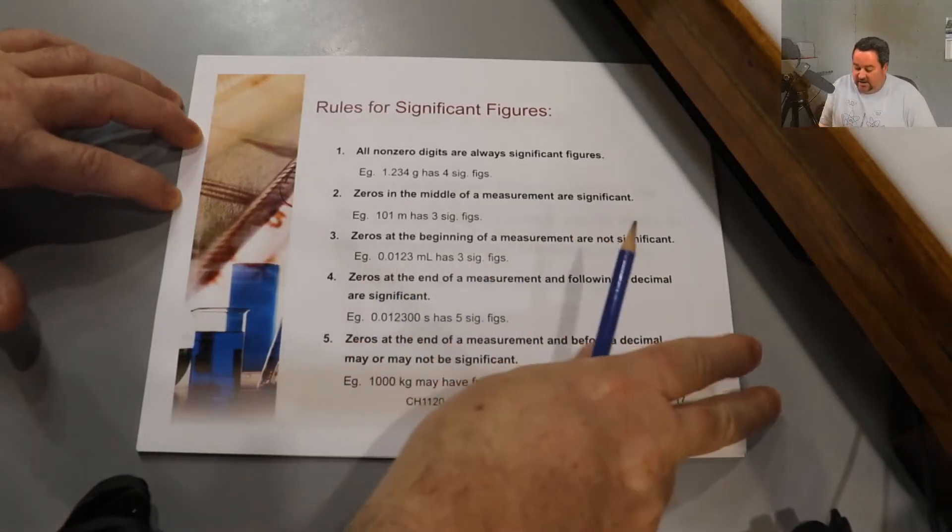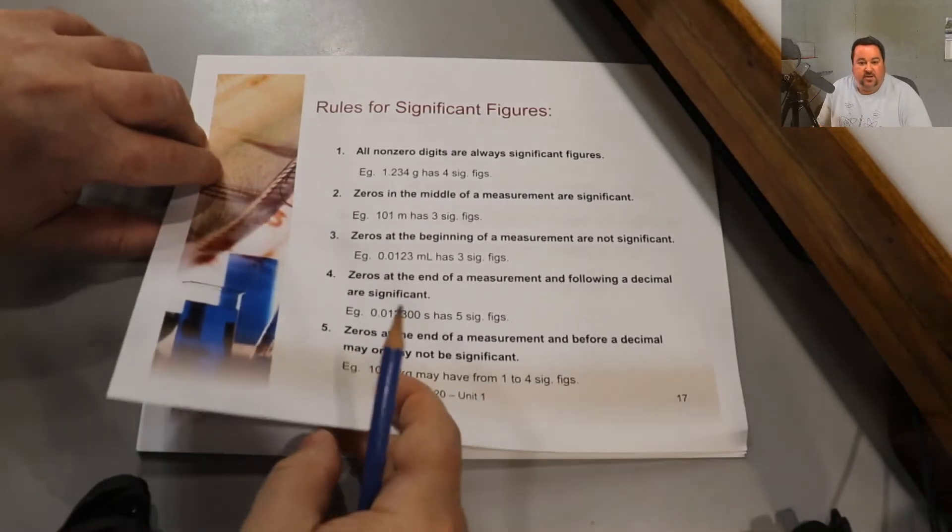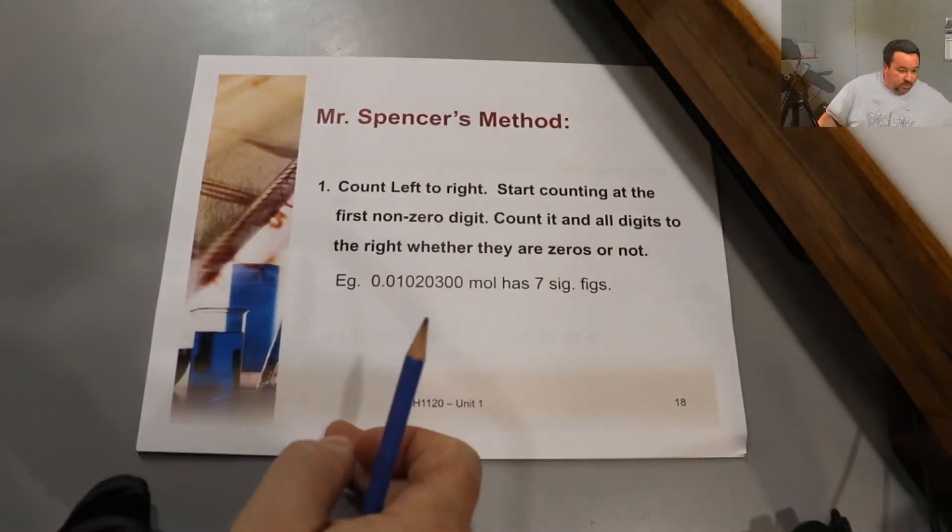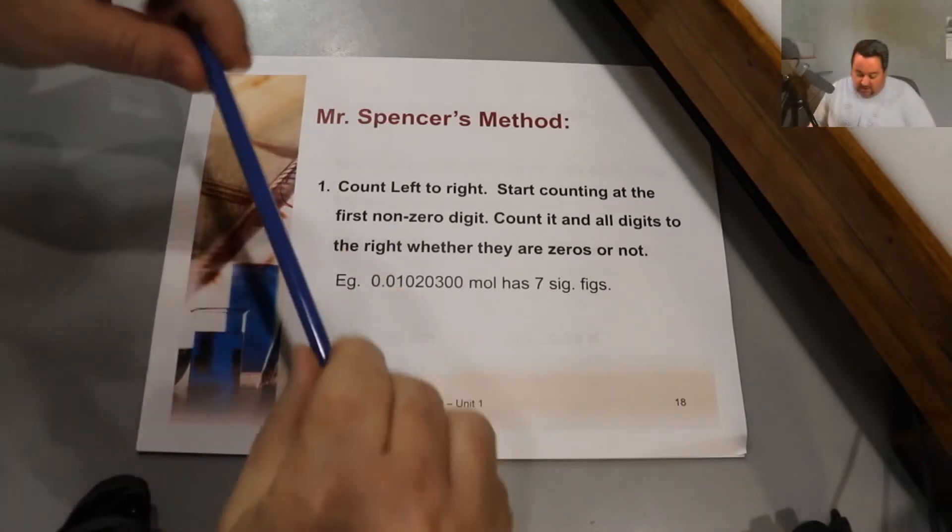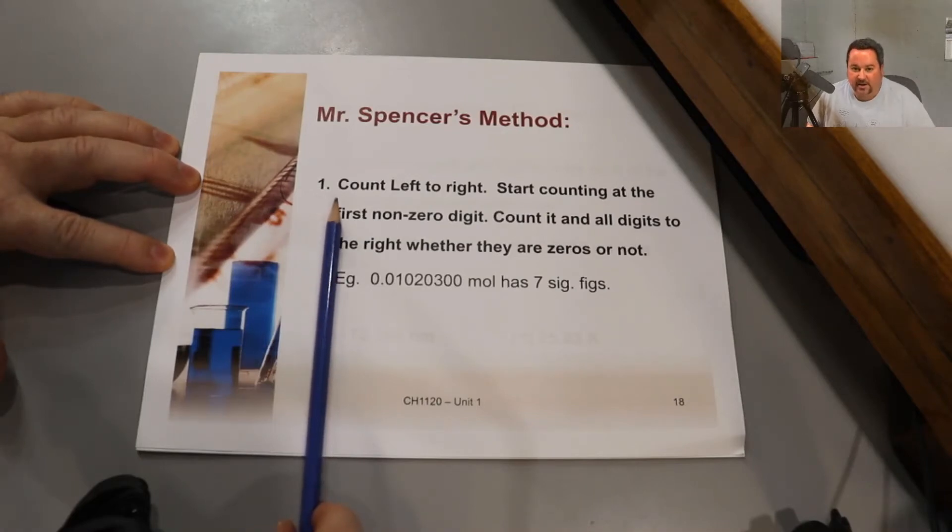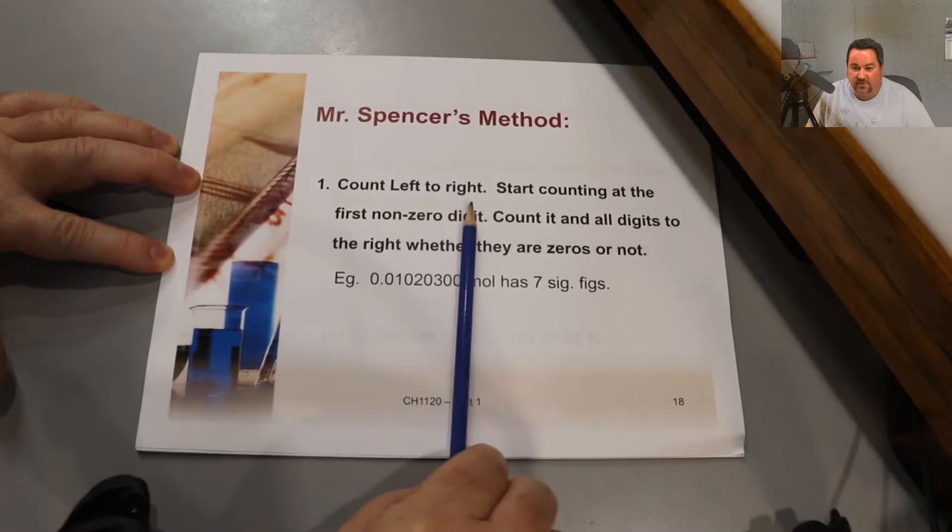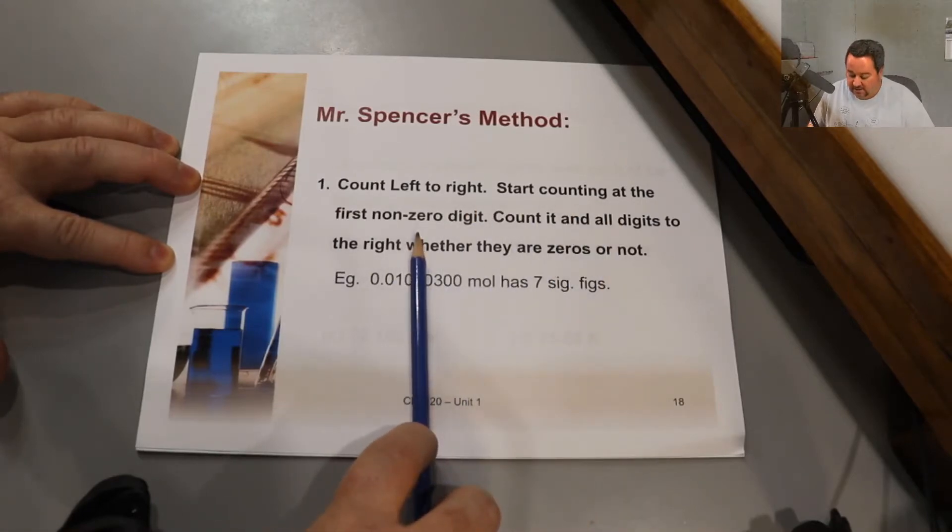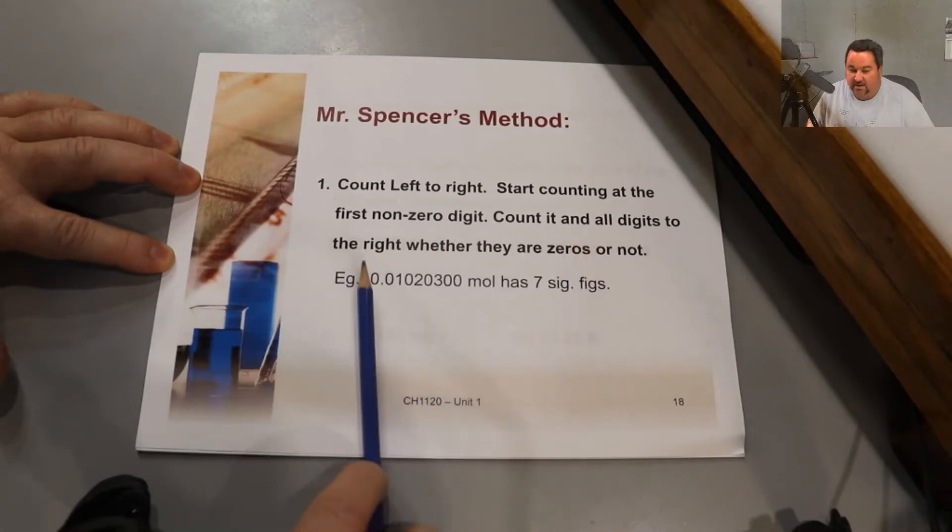In fact, the easiest way to count your sig figs is not to use those five rules. But as you can see under Mr. Spencer's method, there is one step. Which we didn't really need to label one, but it's one and done. You count from left to right. You start counting at the first non-zero digit. Then you count it and all digits to the right, whether they are zeros or not.